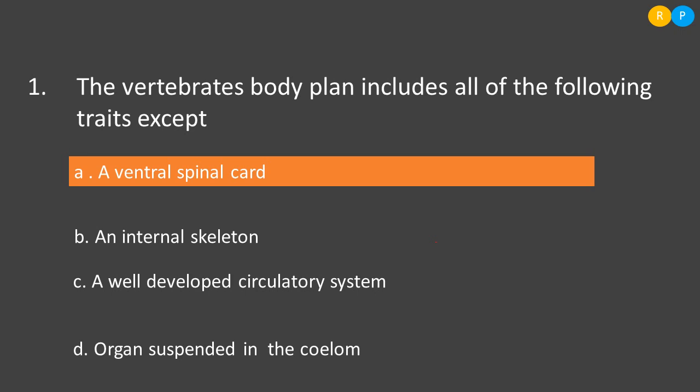The ventral spinal cord is actually a characteristic feature of invertebrate animals, because in vertebrates the spinal cord is located on the dorsal surface of the animal, not on the ventral surface. So this is not a trait of vertebrates. Option B is an internal skeleton, which is a characteristic feature of vertebrates.